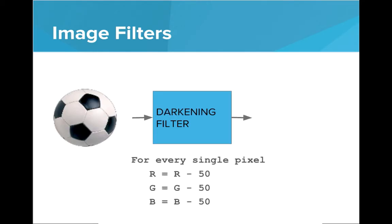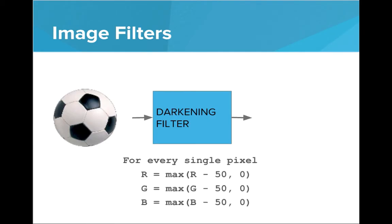If we want to darken, we'll just subtract the same value from each. We'll subtract 50 from each color channel. And the catch here is that channels can't go below zero. So if any of them go negative, we'll need to cap it at zero. So we'll take the maximum between zero and subtracting 50 from the channel. If we do this for every single pixel, we will get a darker image.